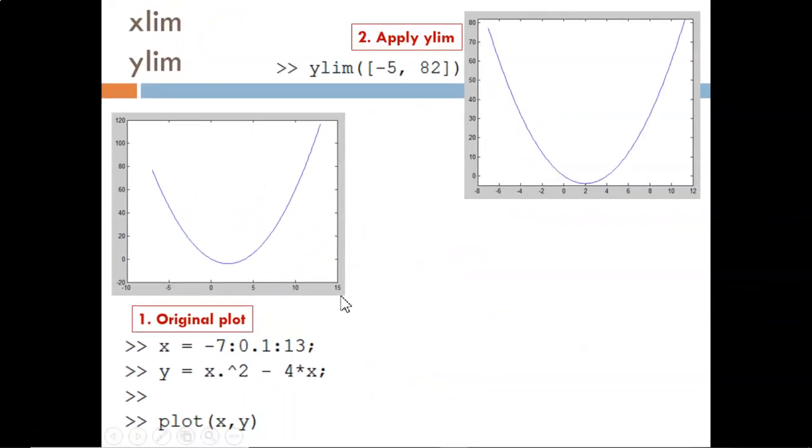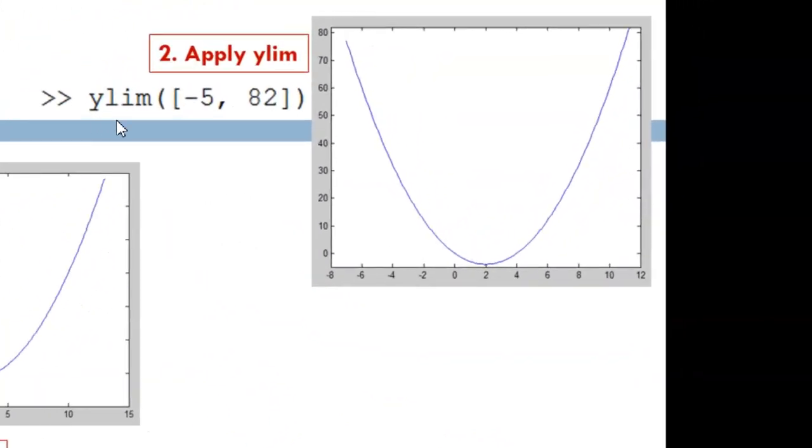The first modification is to the y-axis using the ylim function. The only input argument is a two-element vector with the first number indicating the lower limit and the second number indicating the upper limit. Notice that the y-axis now goes from below 0 to above 80.